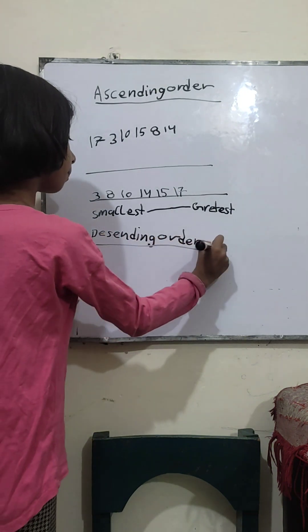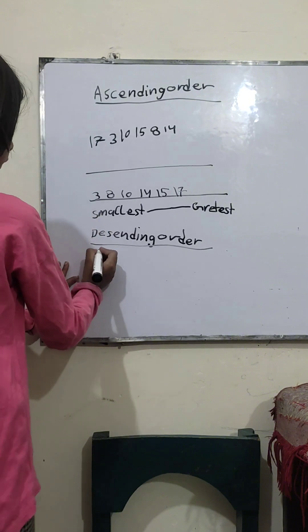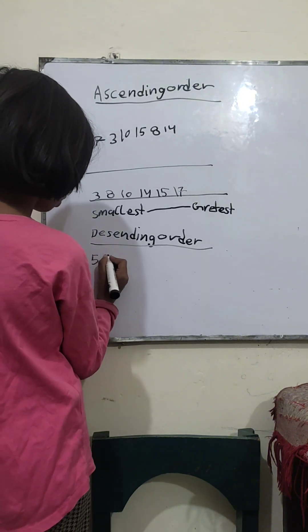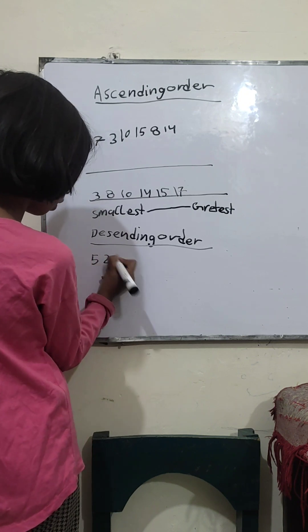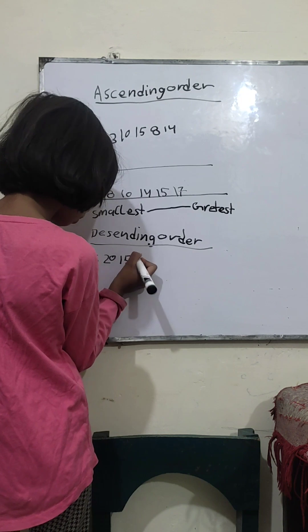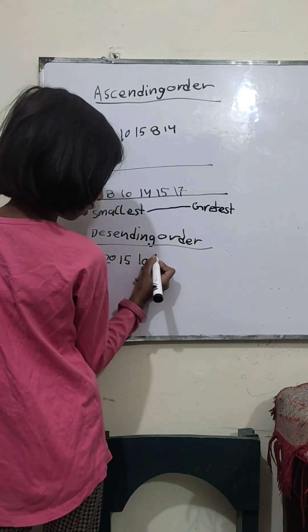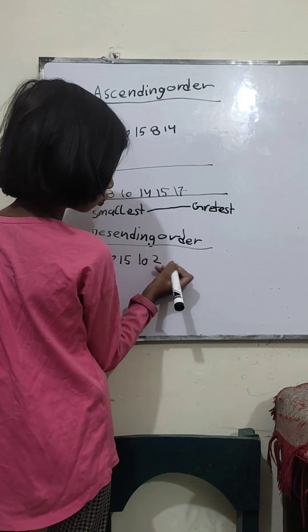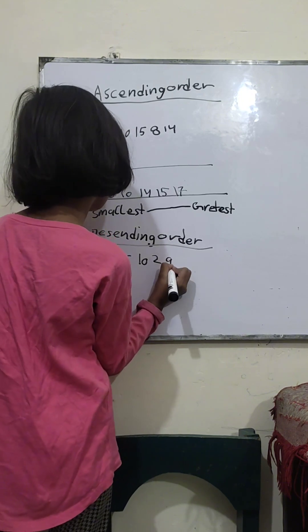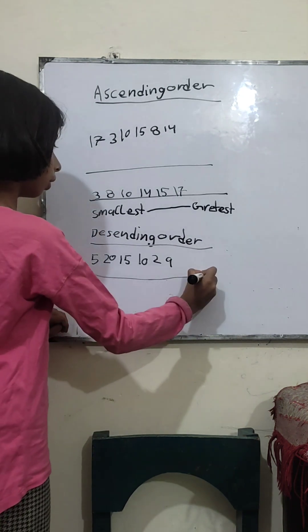First we will write 5, 20, 15, 10, 2, 9. We will write this.